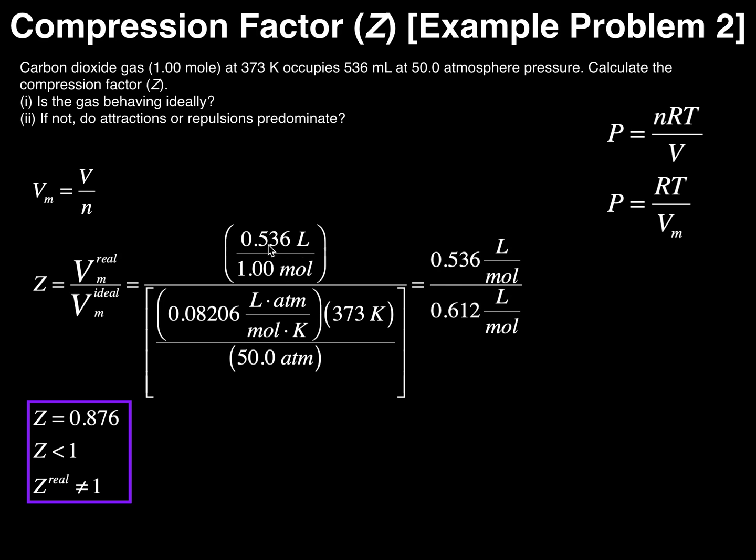Now when I simplify the numerator that gives me 0.536 liters per mole. When I multiply R times the temperature and divide by the pressure, the denominator simplifies to 0.612, and it's going to be in units of liters per mole because the atmospheres and the Kelvin units cancel.